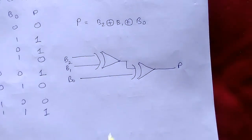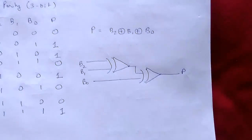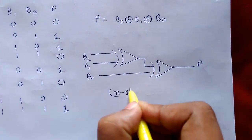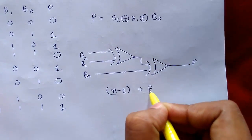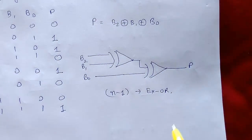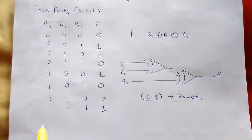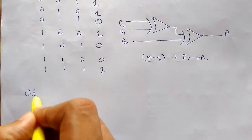This is a parity checker circuit for even three-bit parity. N minus one XOR gates are required for even parity, where n is the number of bits of data. Now we'll check out odd parity.